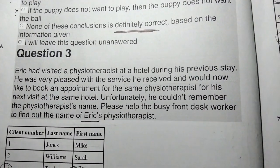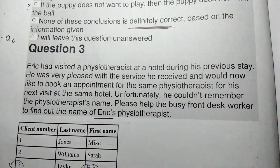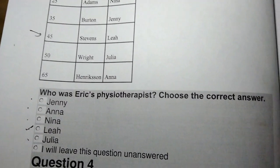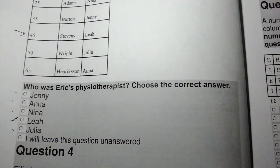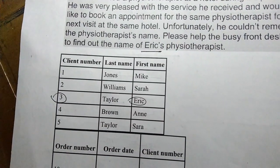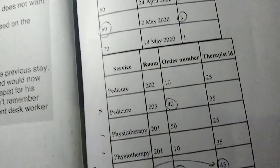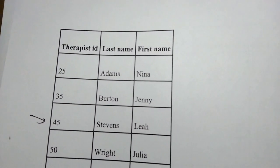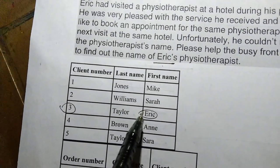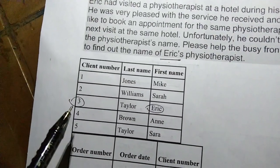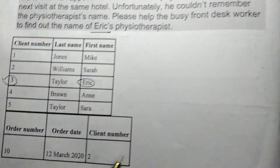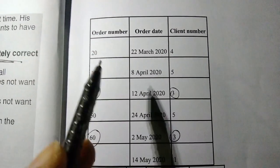Please help the front desk worker to find out the name of Eric's physiotherapist. To find out who was the physiotherapist, choose the correct answer. The relevant tables include: a service table with client number and order number columns; an IDA table; an Eric table; and a web table with client name columns. There is also an order number table.